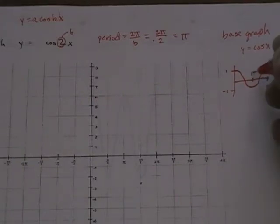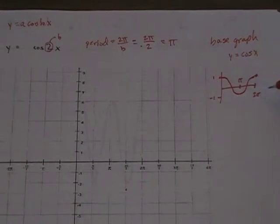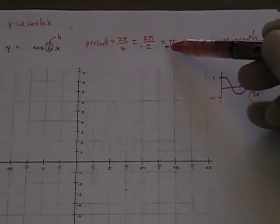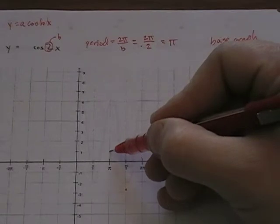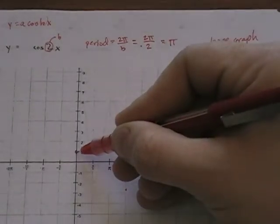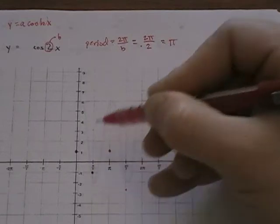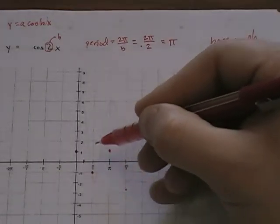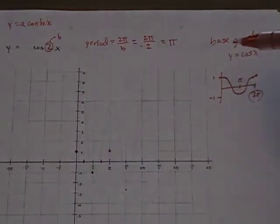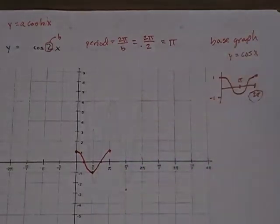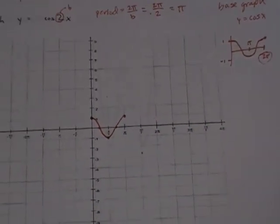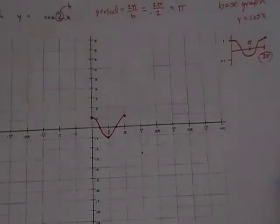Cosine is interesting because it starts at the maximum and goes down and back up. The minimum is at negative one and occurs exactly in the middle. So if the period ends at two pi, the minimum is at pi, and it starts at zero. Now instead of taking two pi to make one cycle, it's going to take pi — so it ends at pi. The minimum is halfway between, and the zeros occur halfway between max and min. We get a nice shrunken cosine graph.